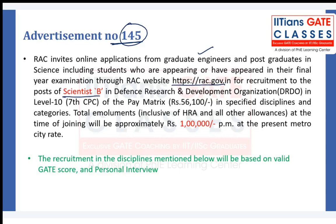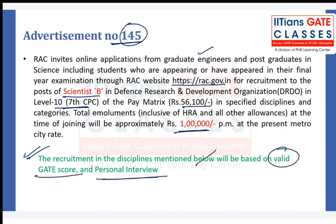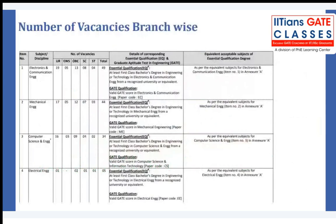They will be offering you the Scientist B position in DRDO — the Defence Research and Development Organisation — at Level 10 of the pay matrix, with a basic pay of ₹56,100. The per-month salary you can expect is around ₹1 lakh including HRA and all. This recruitment is in the disciplines mentioned in the notification, based on the valid GATE score and a personal interview.